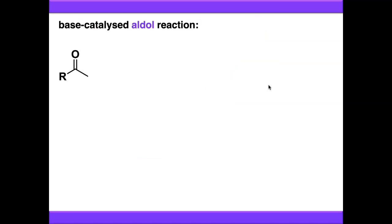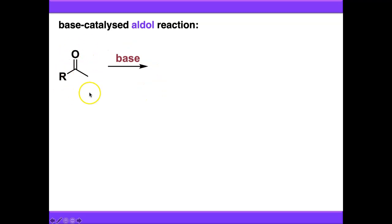Aldol reactions can be done under base catalysis or acid catalysis via the enolates or the enols respectively. Let's start with the base-catalysed one, which proceeds via an enolate. If we take our carbonyl compound and expose it to a base — I've drawn an irreversible reaction arrow here but depending on the base and the nature of the substrate it could be reversible — it's going to remove the alpha proton to form the enolate.